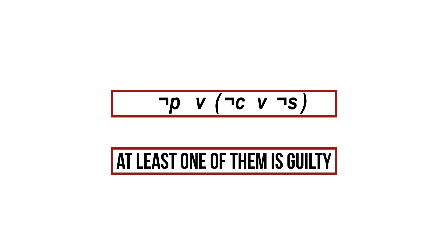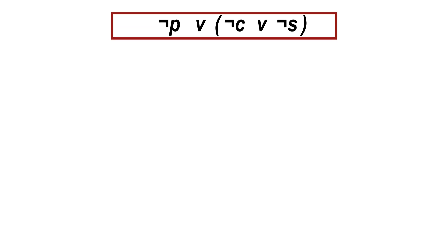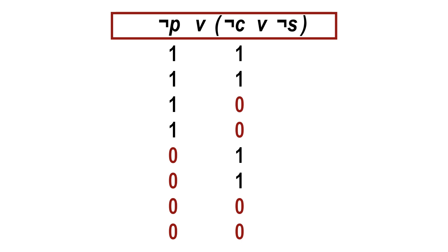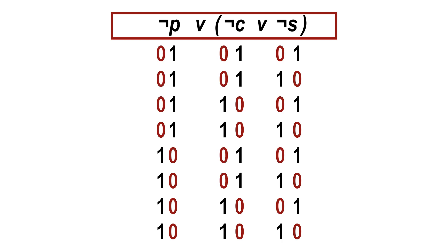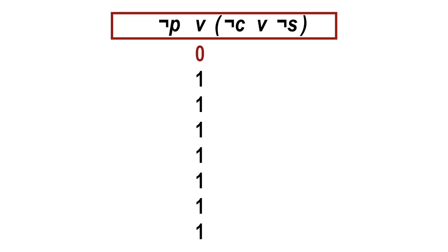We find out in which situations this premise is true using a truth table. We write down all eight possible situations. For p, we take half true and half false; we assign truth values to c in blocks of two, and alternate between true and false for s. We then calculate: first not p, not c, and not s; then not c or not s; and finally the entire formula.